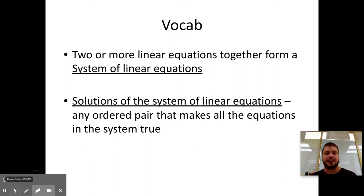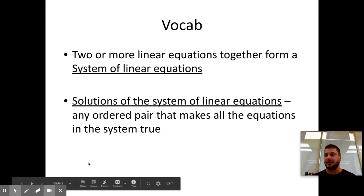Two or more linear equations together forms a system of linear equations. The solution of the system of linear equations is any ordered pair that makes all of the equations in the system true. We are specifically working with two equations in a system. So an x comma y that makes both of those equations true is the answer to the entire system.